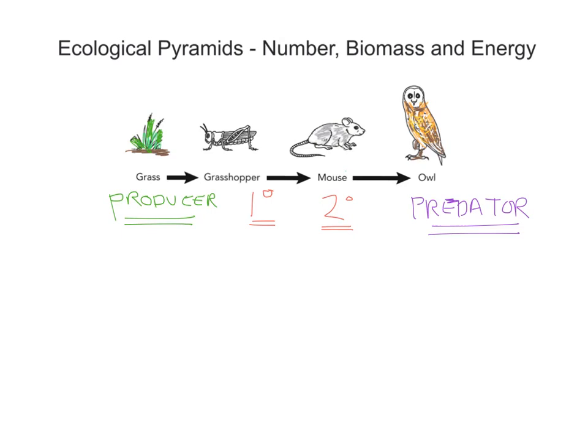Now let's just address these arrows. These arrows mean energy gets transferred to. So the energy within the grass gets transferred to the grasshopper, the energy within the grasshoppers gets transferred to the mouse as the mouse consumes them, and so on. So what we've got here is a very simple food chain.